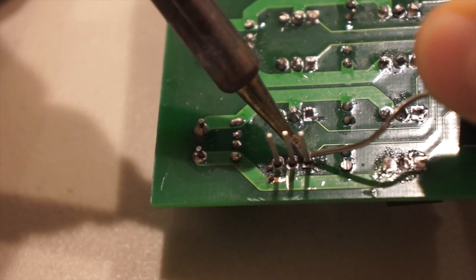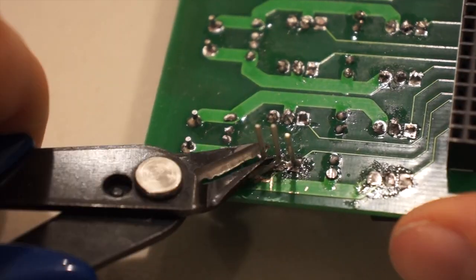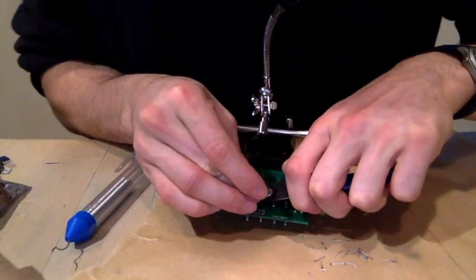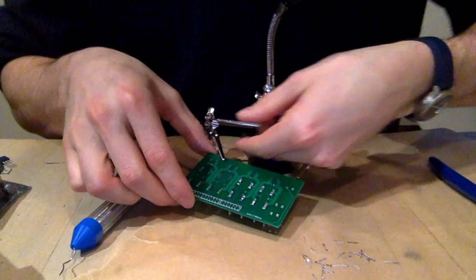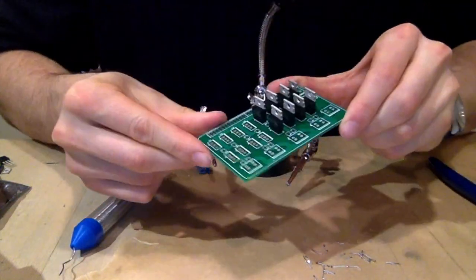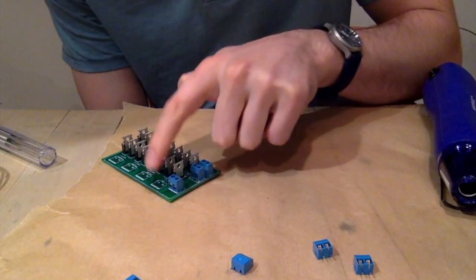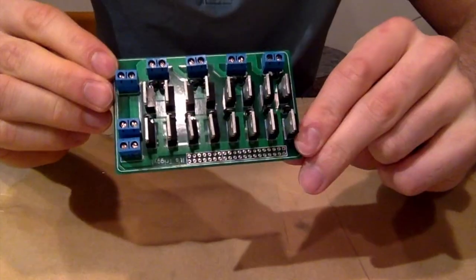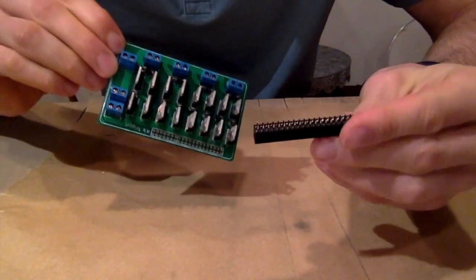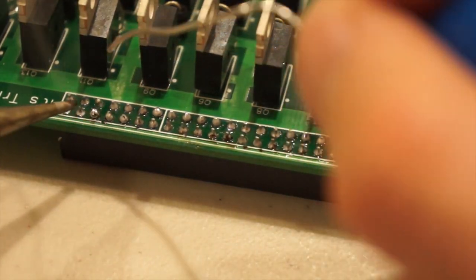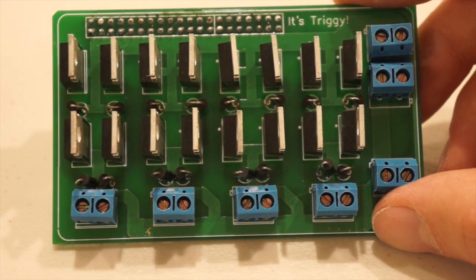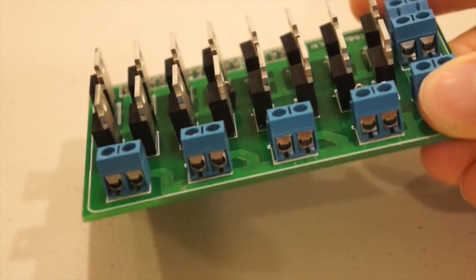Let's get to work soldering. I'll start with the transistors. Now let's solder on these terminal blocks. Oh no! We forgot the diodes! That's okay, we'll solder those on too. Now that we have the diodes in place, the last thing we need to solder are these header pins. And we're just about ready to go here. We have all of our transistors, diodes, terminal blocks, and header pins soldered on.